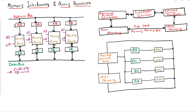Here you can see this is one set, or you can say memory module, which contains an address register and a data register. So each module has an address register and a data register.